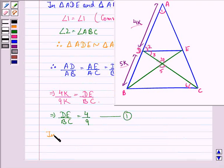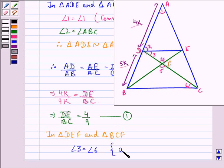Now in triangle DEF and triangle BCF, that is this triangle and this triangle, angle 3 is equal to angle 6 because they are the alternate interior angles.